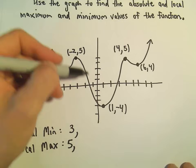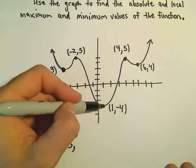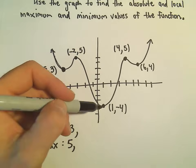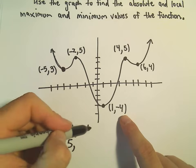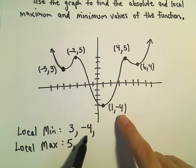As we go down, it kind of bottoms out here at this point 1 comma negative 4. So again, that would be a local minimum. We have a local minimum at the y value of negative 4.